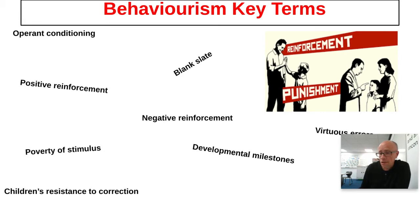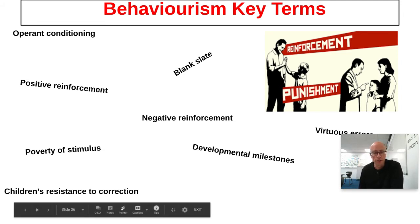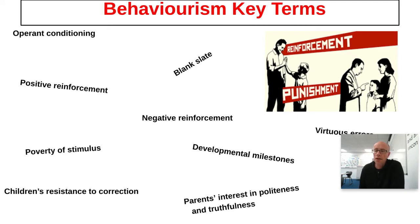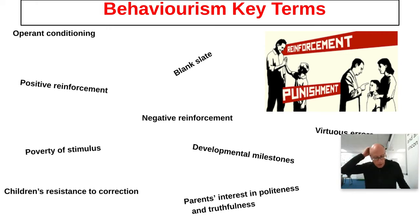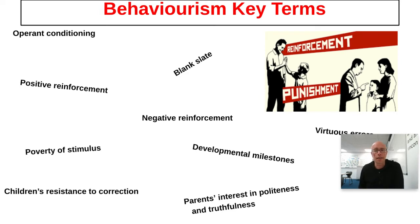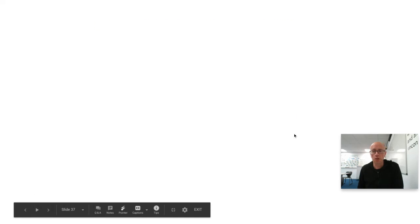Another argument against behaviorism is children's innate resistance to correction — rather than being pliant, children tend to resist correction, as shown in many amusing transcripts. Also, parents are not that interested in children's grammar; they're much more interested in the truth value of what children say. For example, if a child says 'we run away from nursery,' a parent is more likely to question whether it's true than to correct 'run' to 'ran.'